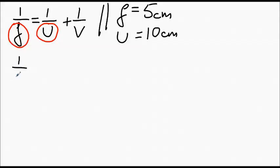You could have 1 over 5 centimeters equals 1 over 10 centimeters plus 1 over V. So you can see the V is still stuck on the right-hand side. Calculate what these values are.